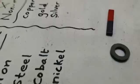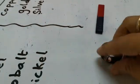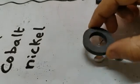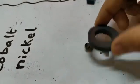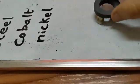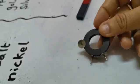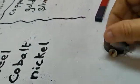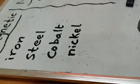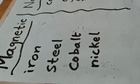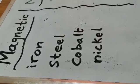Again, I am trying with some pins. Can you see the pins? I am going to try with these pins — are they magnetic? Yes, they are magnetic metals. It can be iron, it can be steel, it can be cobalt, it can be nickel. These are all magnetic metals: iron, steel, cobalt, nickel.